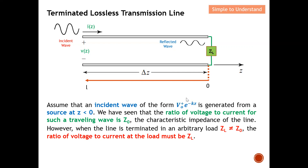Assume that an incident wave of this form is generated from a source at z less than zero. At any point along the transmission line excited with this incident wave, the ratio of voltage to current for such a traveling wave is Z0, the characteristic impedance of the line. This means that at any point, the impedance along the transmission line is equal to Z0.